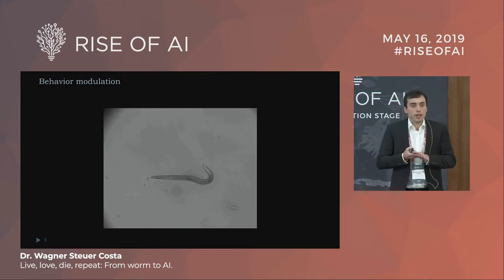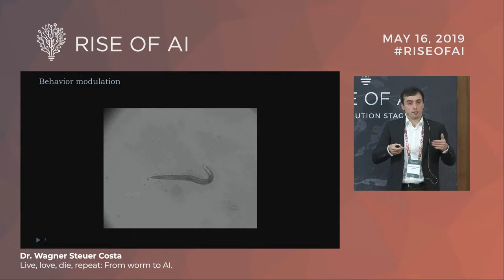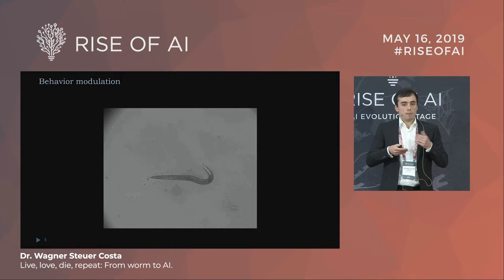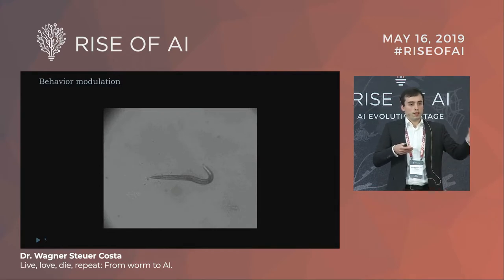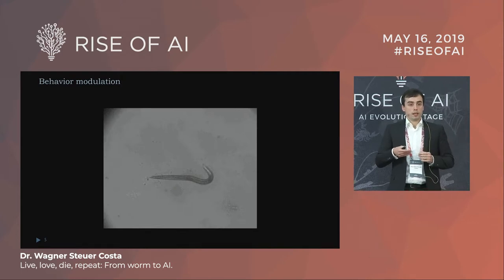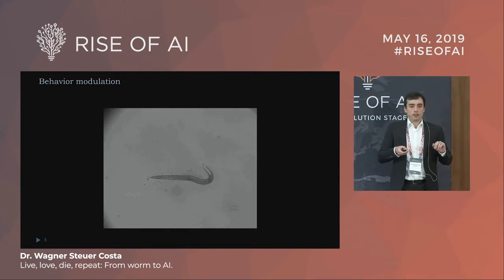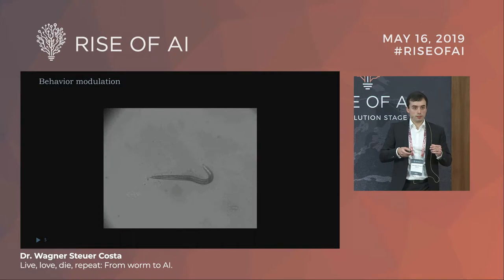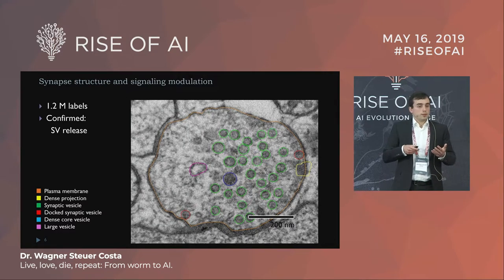Upon photo-activation, the animal swims around. One question from the last talk was: can we make these connections faster? Well, not substantially faster, but about 30% faster — we can improve how fast the neurons are working, and the animal will move and swim faster. However, this comes with a hinge: the animal becomes more susceptible to noise, so it will make more errors while performing its movement.